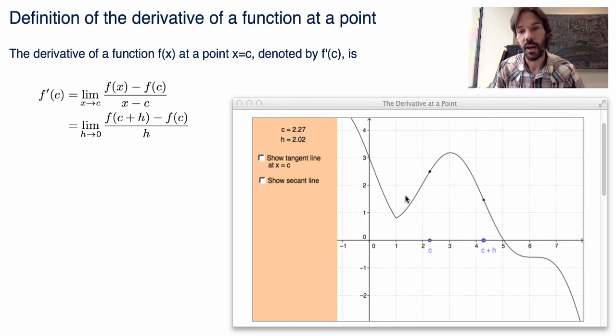So if I have a graph of a function, I'm getting away from just the interpretation in terms of position and velocity, and I'm taking an arbitrary function f(x), where the x-axis here represents the variable x, and the y-axis is the function f(x).